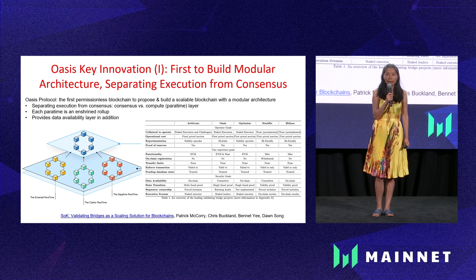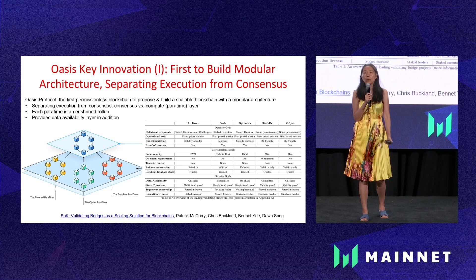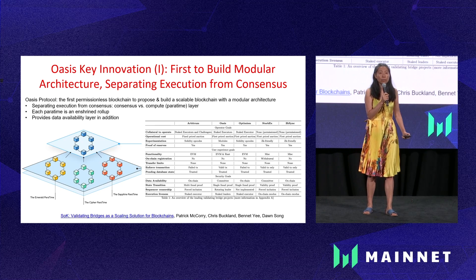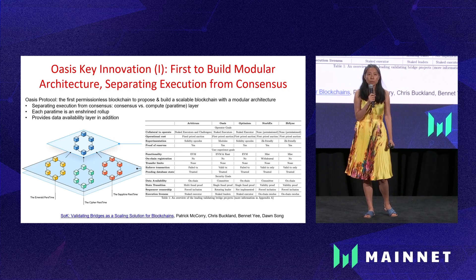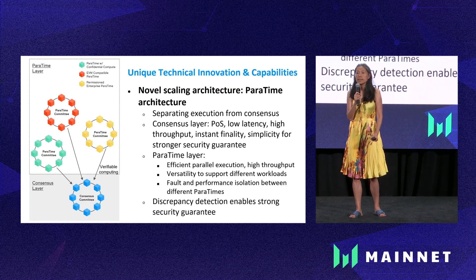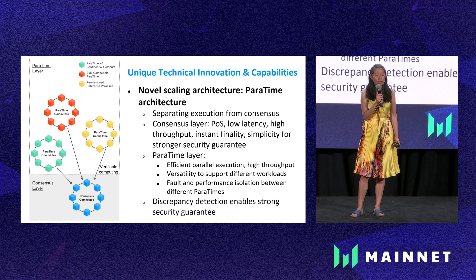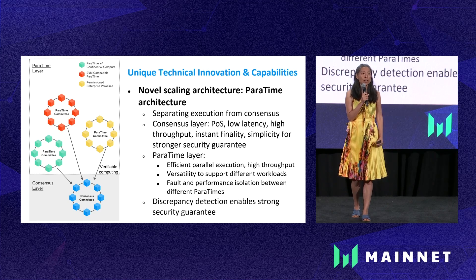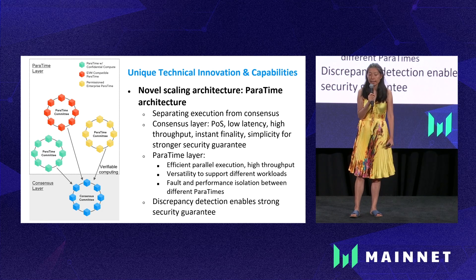With the Oasis architecture, we have a separate consensus layer and compute layer. At the compute layer we have what we call different paratimes — parallel runtimes — that enable different isolated computing environments to run concurrently in parallel and provide further scalability. Each paratime is essentially what's called an enshrined rollup on the consensus layer in today's technology. These different paratimes also enable the architecture to support very diverse workloads and provide novel capabilities that other architectures cannot.